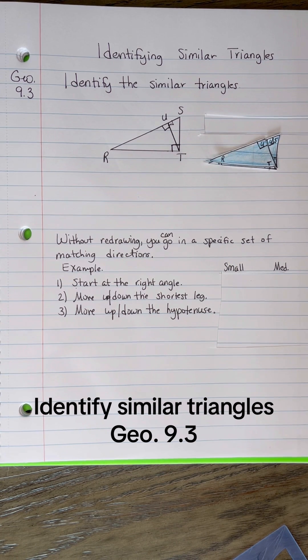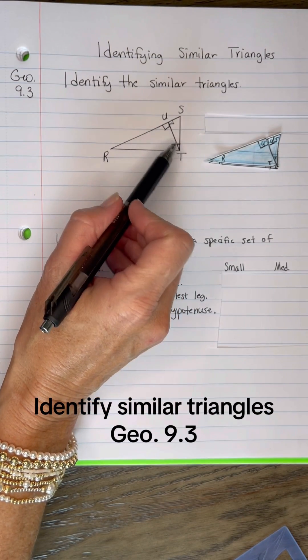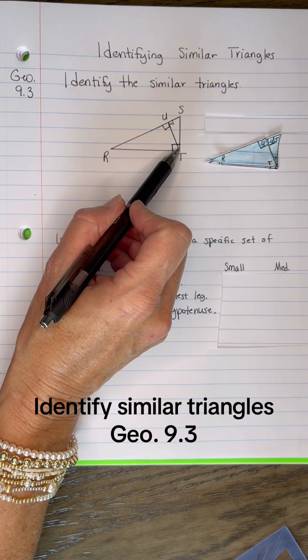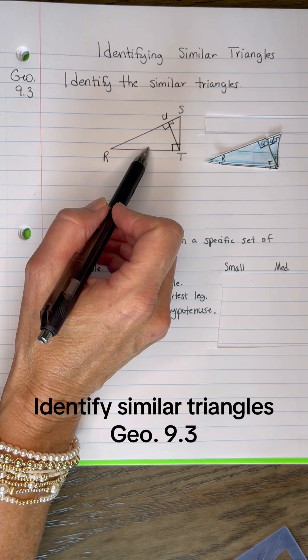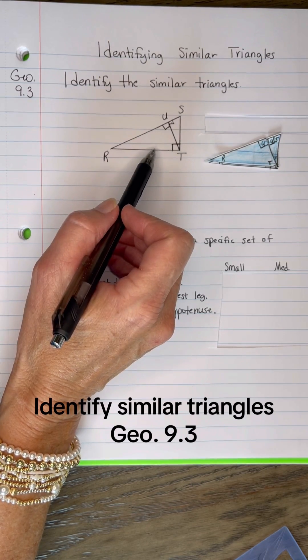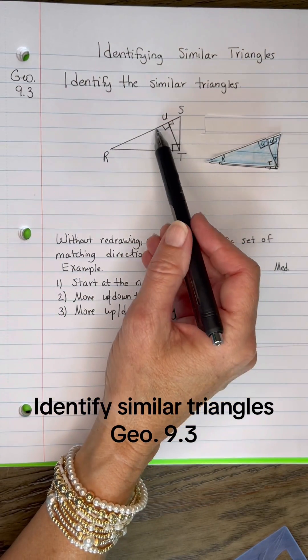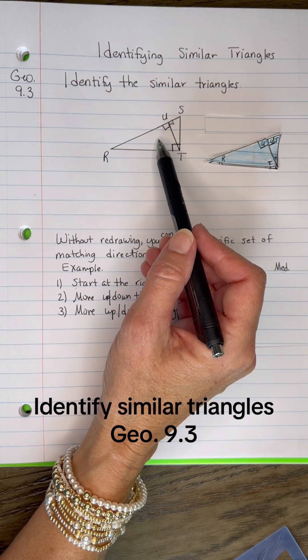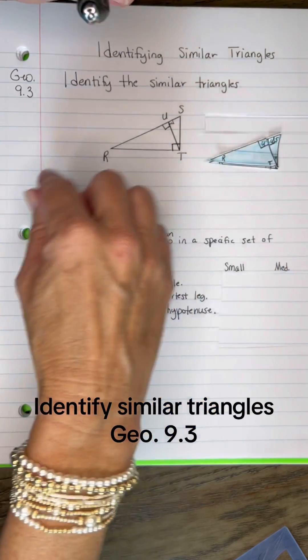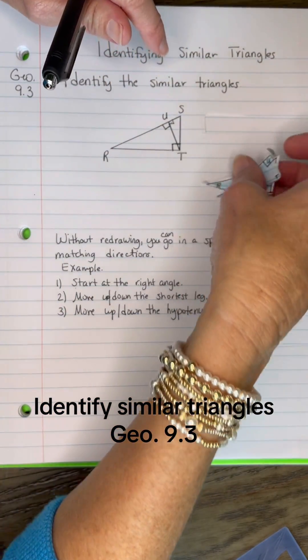It says if you draw an altitude to the hypotenuse of a right triangle like this, that would be the altitude, then you're going to form two more triangles and they will be similar to the original triangle. And right here, it wants us to identify the similar triangles. And sometimes that's a little bit confusing. They suggest that you draw them and you orient them all in the same direction.